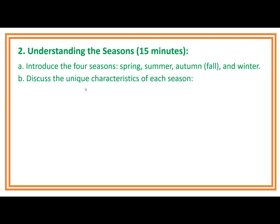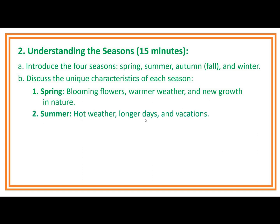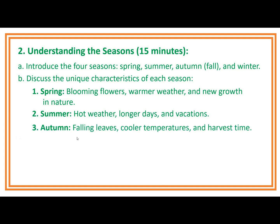Discuss the unique characteristics of each season: 1. Spring — blooming flowers, warmer weather, and new growth in nature. 2. Summer — hot weather, longer days, and vacations. 3. Autumn — falling leaves, cooler temperatures, and harvest time. 4. Winter — cold weather, snow, and winter sports. Write down key points on the whiteboard or chalkboard as you discuss each season.